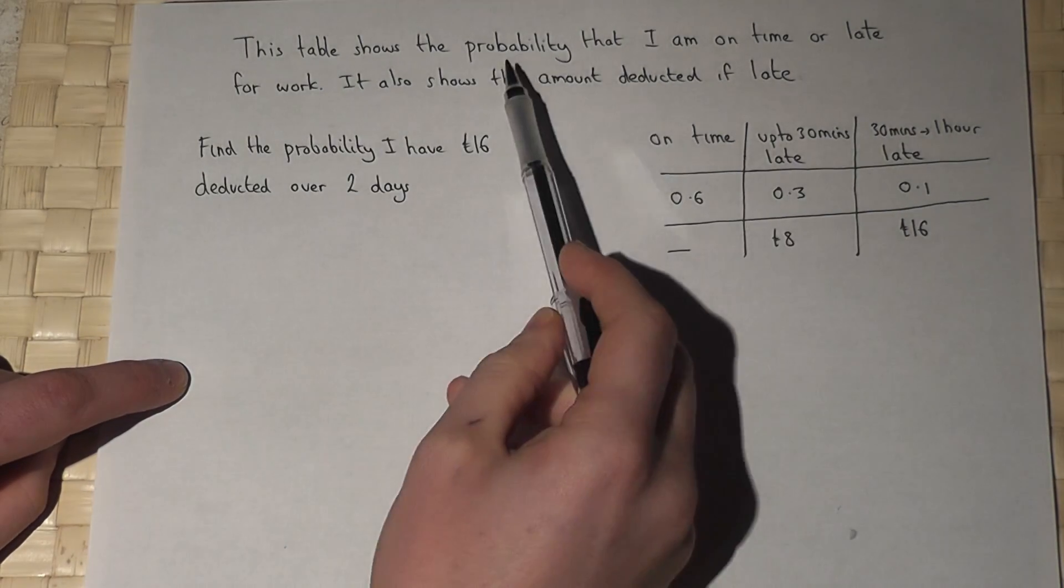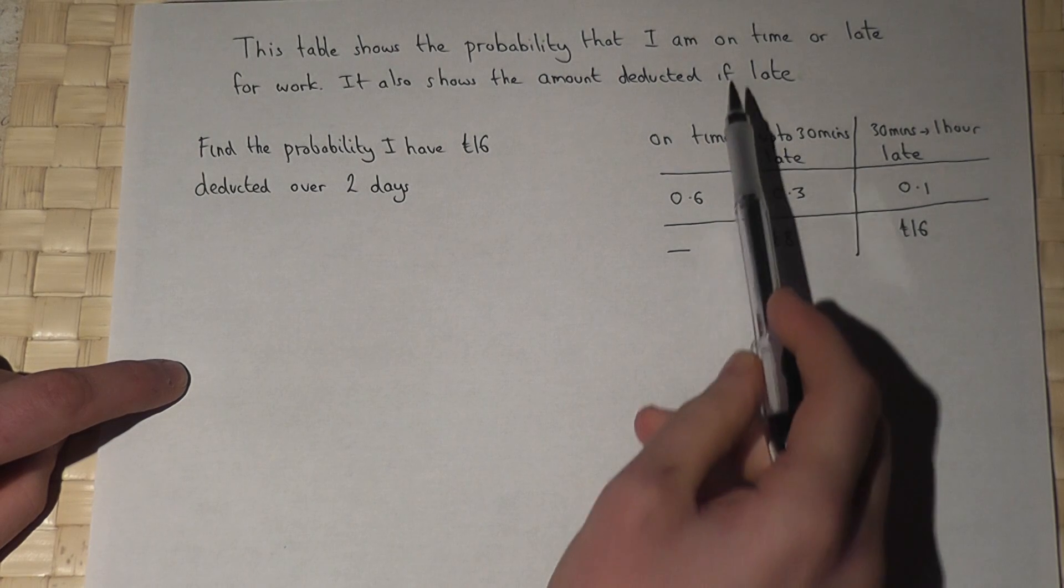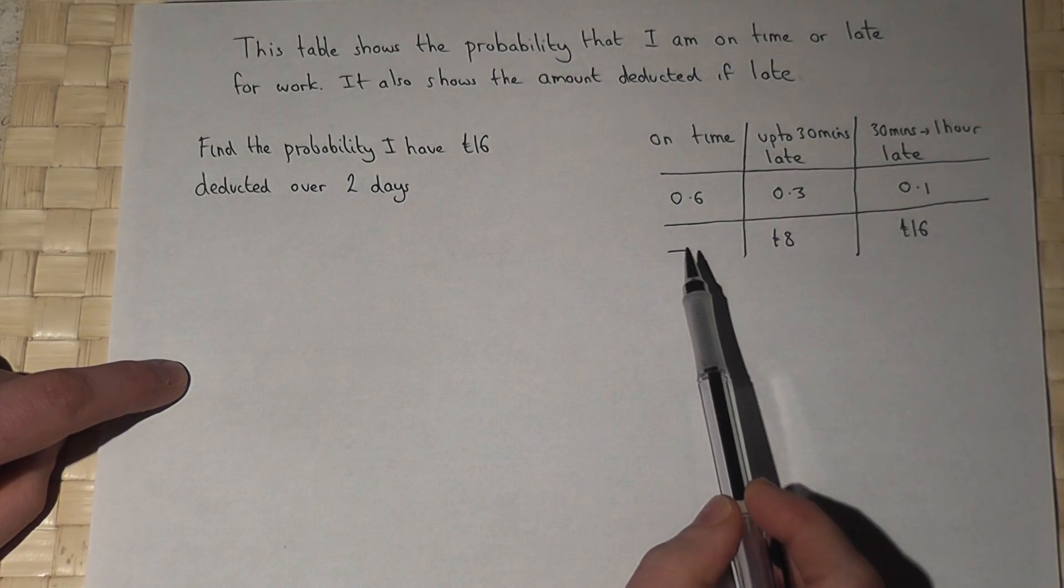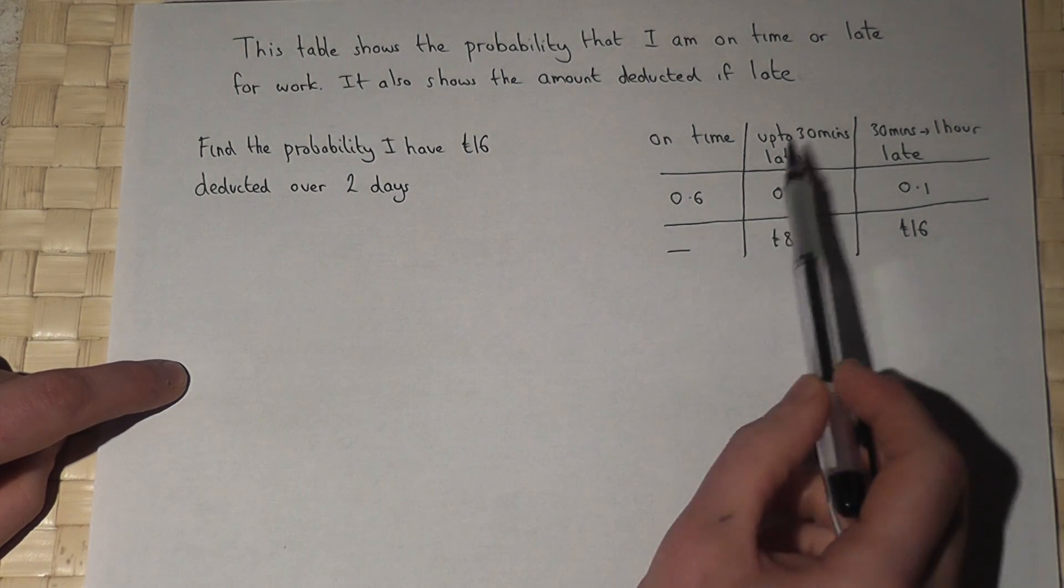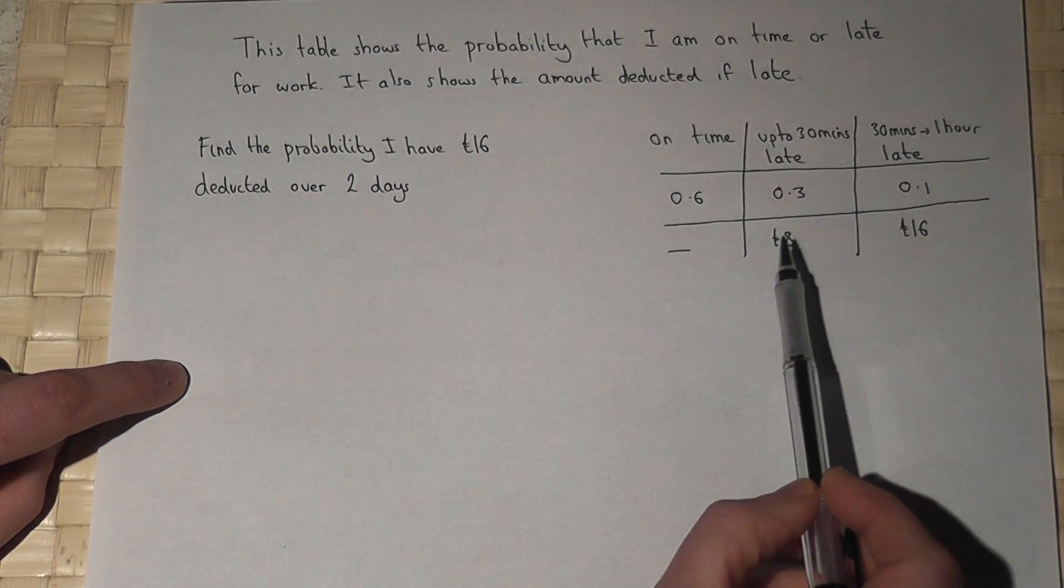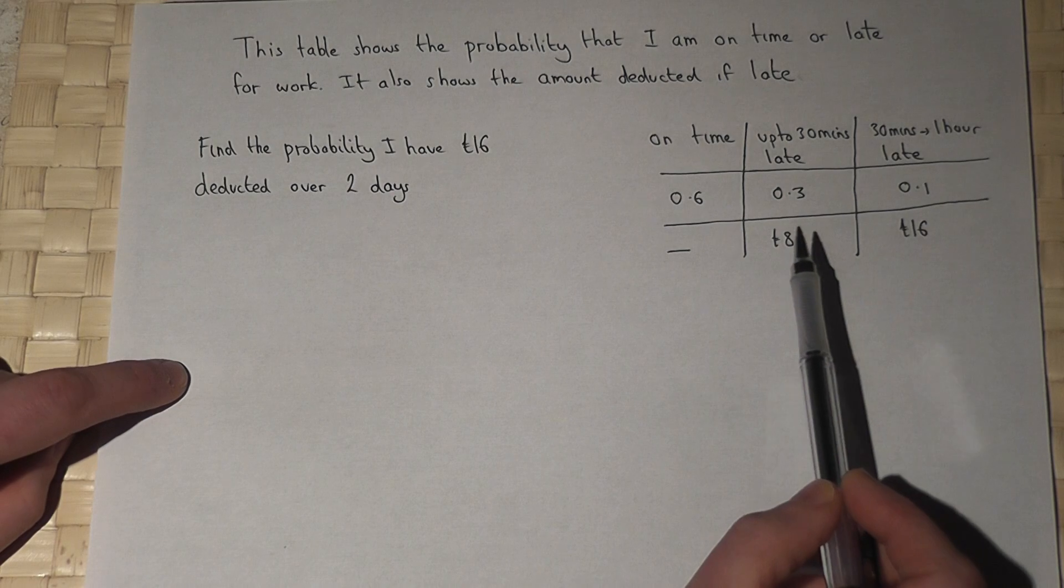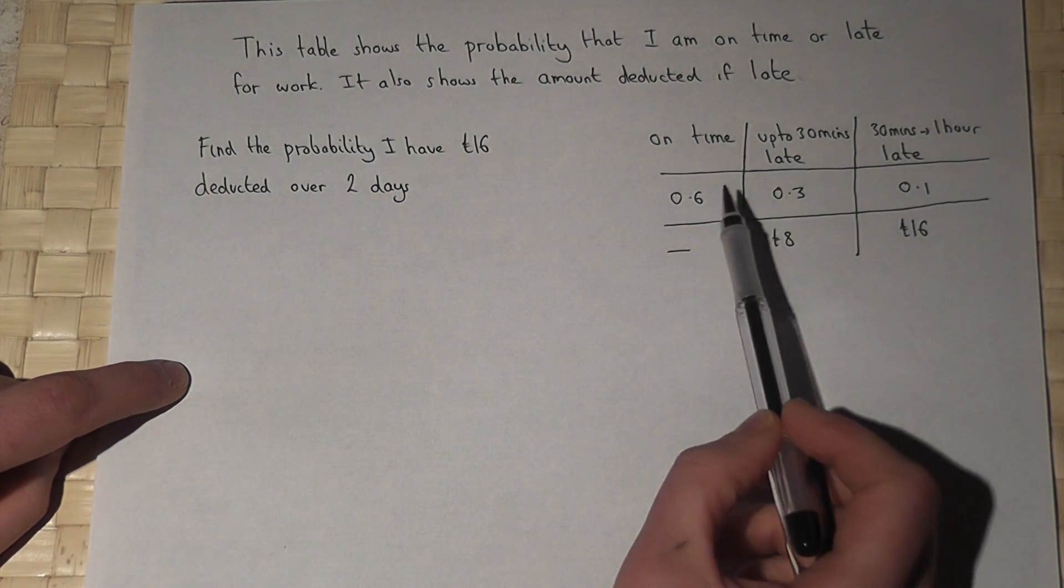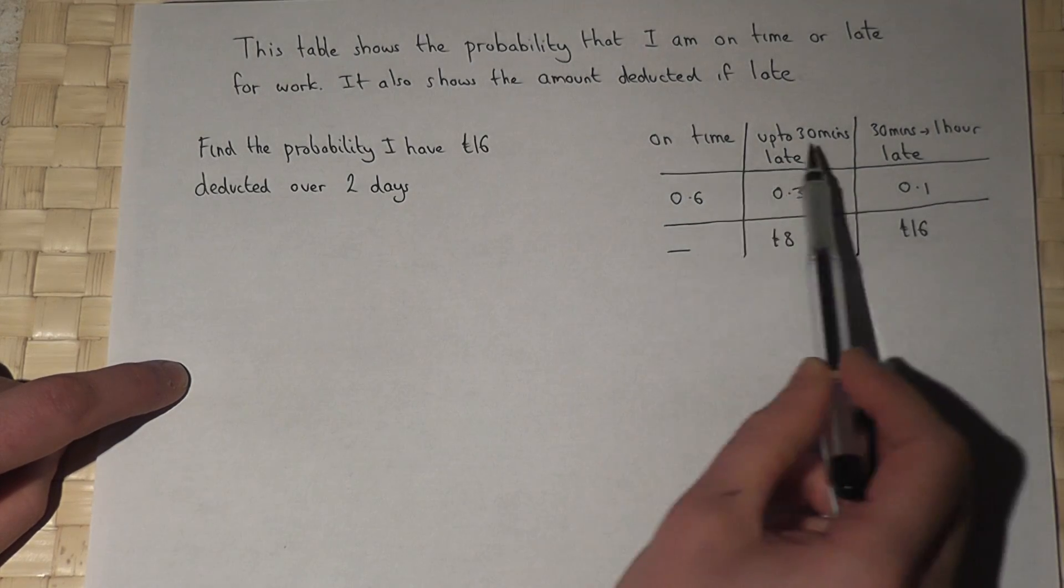The table here shows the chance that I'm late or on time to work. It shows that if I'm on time, I have no money deducted. If I'm up to 30 minutes late, I have £8 deducted. And if I'm between 30 minutes and an hour late, I have £16 deducted. These are the chances of these occurring.